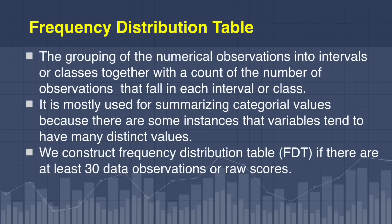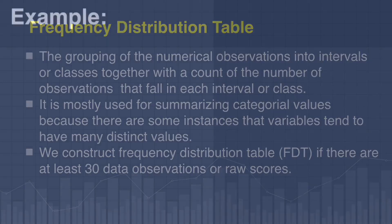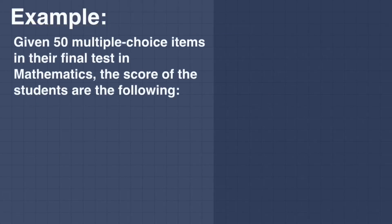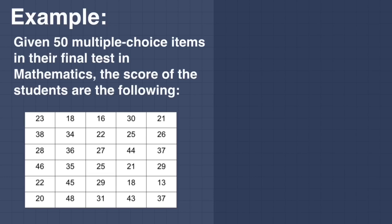When do we need to construct a Frequency Distribution Table or FDT? We construct a Frequency Distribution Table if there are at least 30 data observations or raw scores. For example, given 50 multiple choice items in their final test in mathematics, the scores of the students are the following.